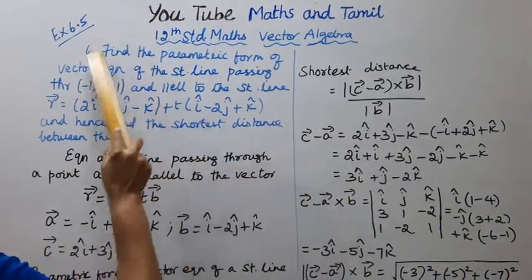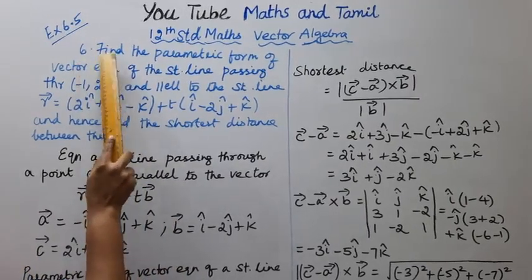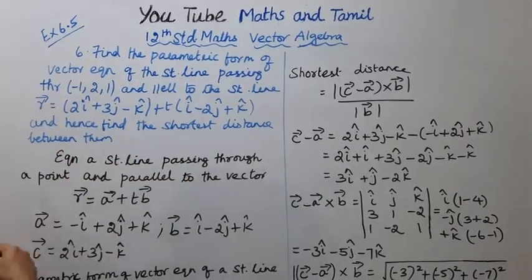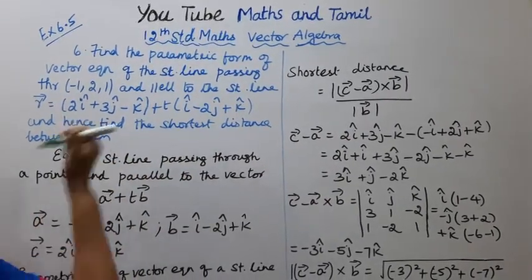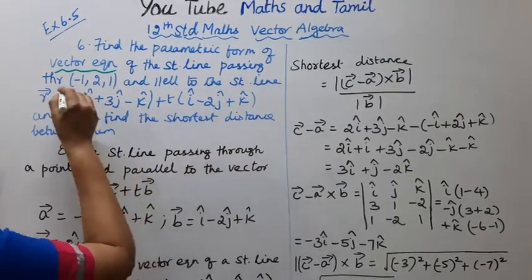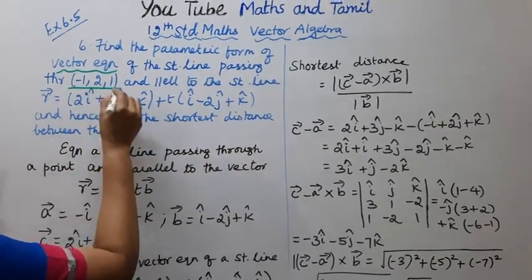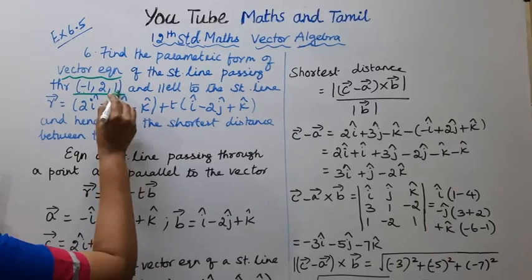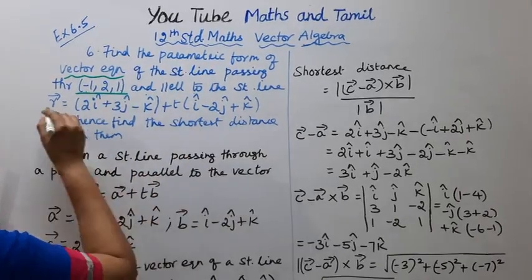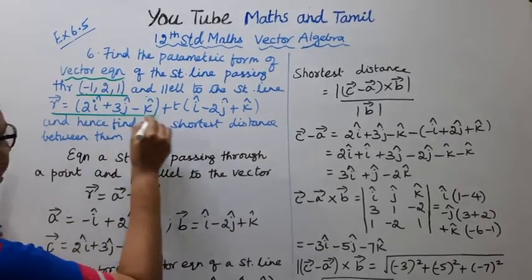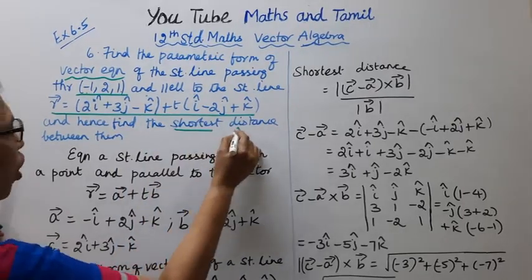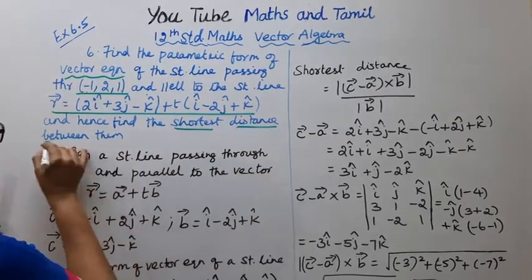Exercise 6.5.6: Find the parametric form of vector equation of the straight line passing through the point (-1, 2, 1) and parallel to the straight line, and hence find the shortest distance between them.